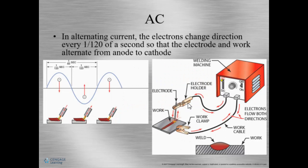AC or alternating current is just what it sounds like — the current is alternating. The current goes from positive to negative. The positive side is called an anode and the negative part is called a cathode, so it goes from positive to negative continuously. The term hertz refers to the time it takes to complete one cycle. In the U.S., 60 hertz is very common, and in other countries 50 hertz is used.